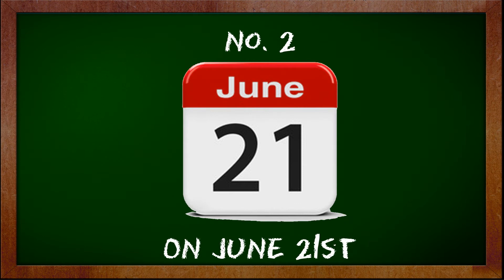Number two is dates in the year. On the 21st of June. Although speakers of American English would probably say June 21st without the preposition of. So that's on, days and dates.